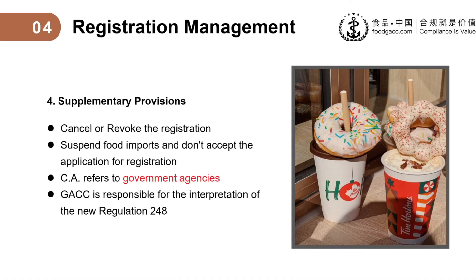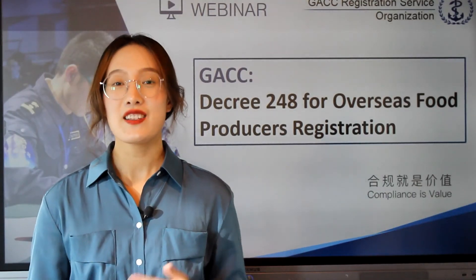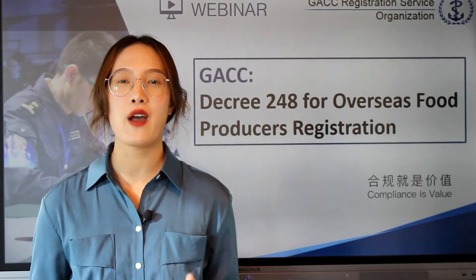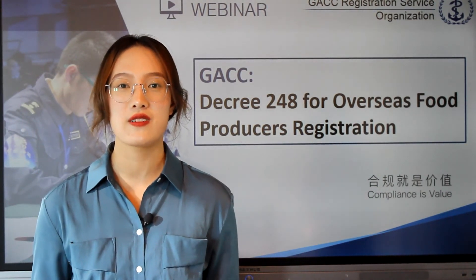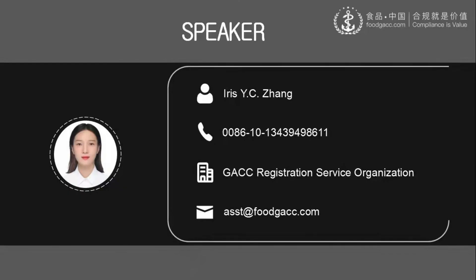The competent authority in these regulations refers to government agencies in charge of food safety and sanitation oversight of food producing facilities in the country or region. GACC is responsible for the interpretation of the new regulation 248. That's all for today. Thank you for watching. If you have any questions or suggestions, you can contact me and email us. I hope today's webinar will help you.